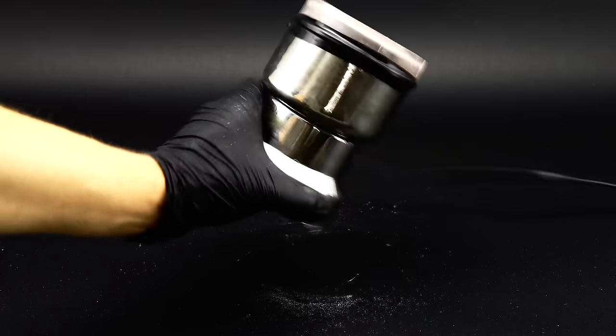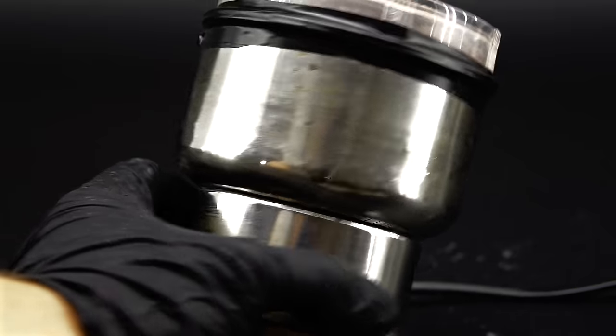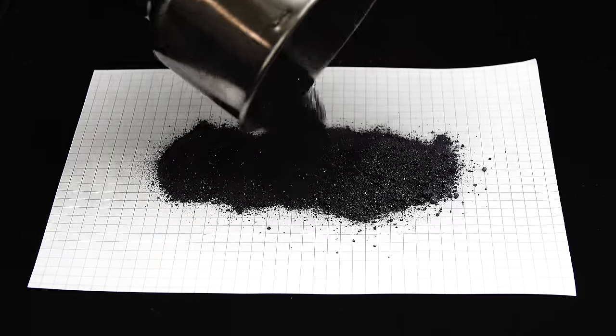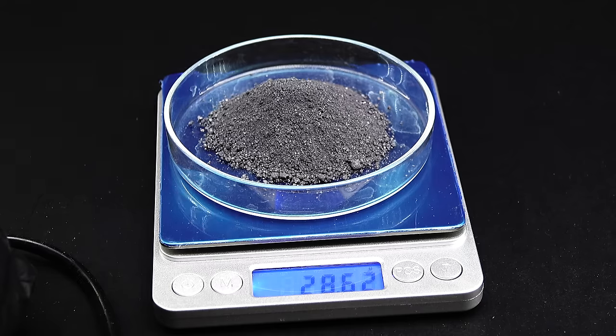This time I really committed to it and you can even see how hard the silicon smashed against the metal walls of the grinder. Anyway, the powder now looked much better and I weighed 28 grams of it to use for making the silicon tetrachloride.